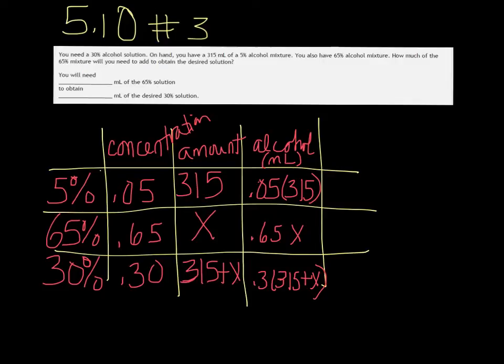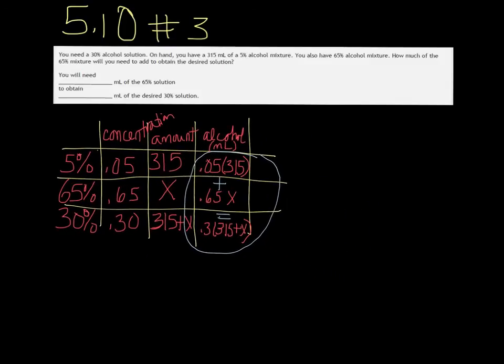In this last column here, this is giving you your equation. Because you're going to add the alcohol from the one solution to the alcohol in the other solution, and it will equal the amount that you wanted. You wanted 30% alcohol. So we have an equation now. I'm going to minimize this so we can write our equation down.